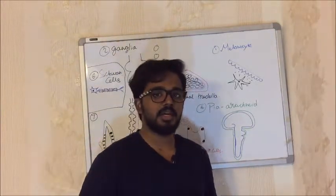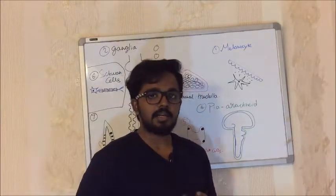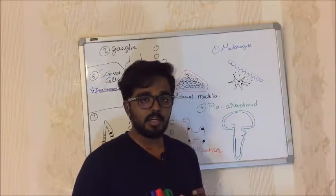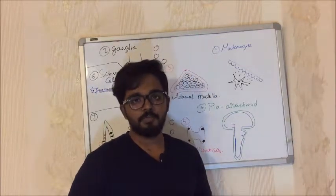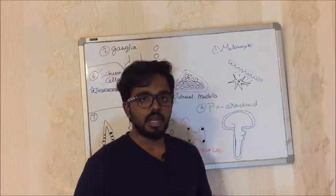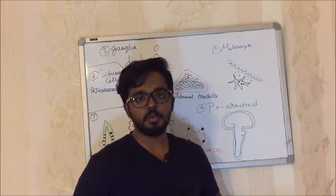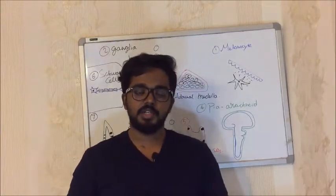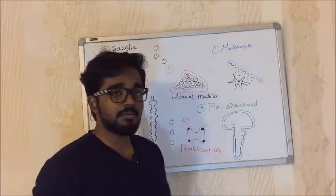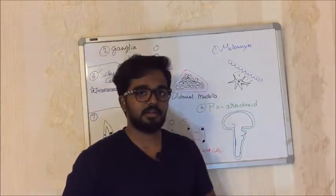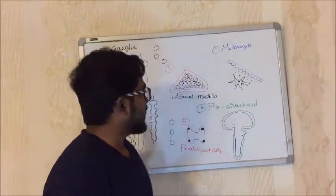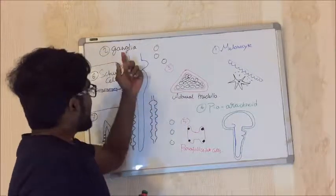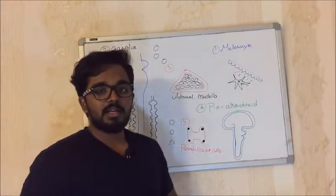Melanocytes are also found in the iris and in the heart region, as well as in the mesencephalon — the mid-brain region. Melanocytes function to secrete melanin.